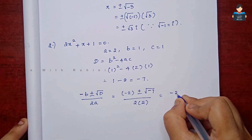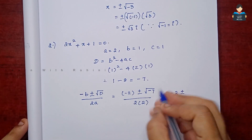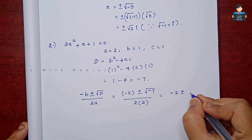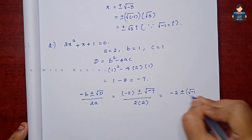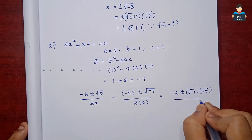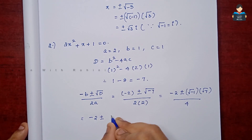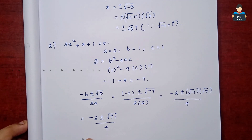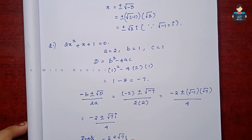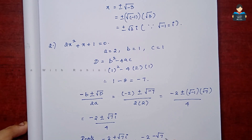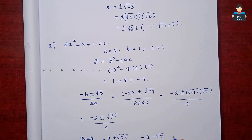This gives x = (-2 ± √7 · i) / 4. So the two roots are (-2 + √7 · i) / 4 and (-2 - √7 · i) / 4.